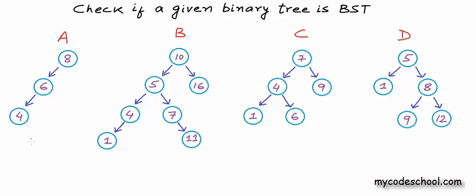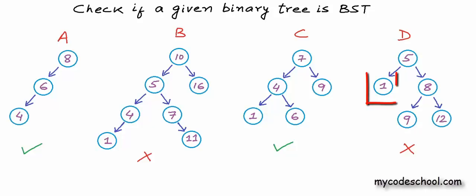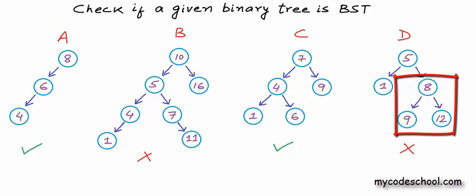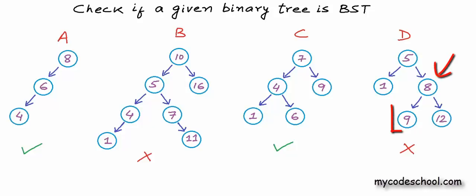Of these binary trees shown here, A and C are binary search trees but B and D are not. In B, for the root node with value 10, we have 11 in its left subtree which is greater than 10, but all values in the left subtree must be lesser. In D, the root node has value 5 with 1 in the left subtree and 8, 9, and 12 in the right subtree — good for the root. But for the node with value 8, we have 9 in its left, so this tree is not a binary search tree.